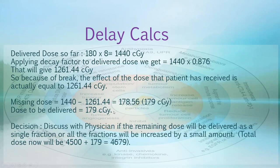We subtract 1261 from 1440 and get approximately 179 cGy that the patient missed. So the total dose becomes 4679 cGy instead of 4500. You can discuss with the physician whether to add a separate 26th fraction to deliver this dose, or to split it among the remaining fractions by increasing the dose per fraction. This is the concept of calculating dose when a patient has a gap in treatment.